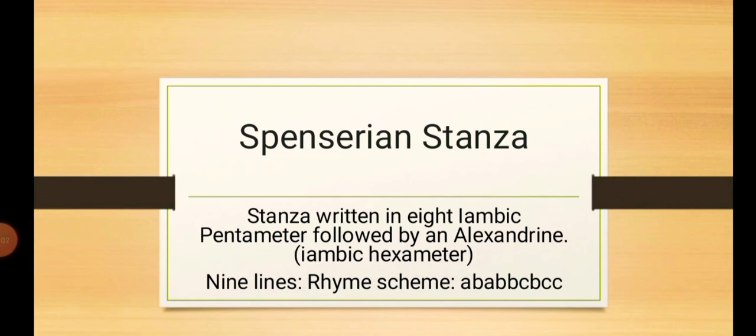Moving on to another stanza pattern which is most important and most famous in English literature and in the form of poetry, that is Spenserian stanza. As the name suggests, it was most commonly used by Spenser. This is a stanza written in eight iambic pentameter followed by an alexandrine, that is iambic hexameter. Together it has got nine lines each.